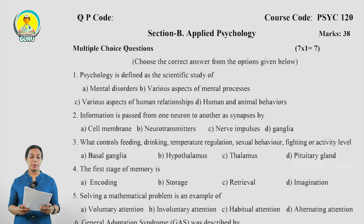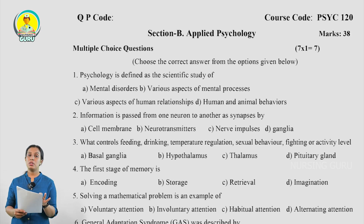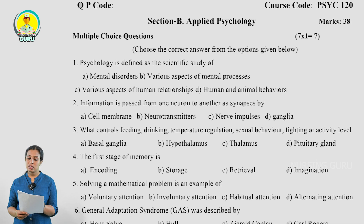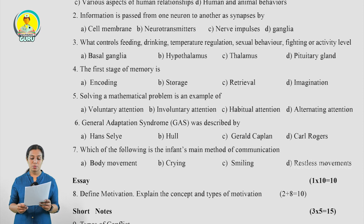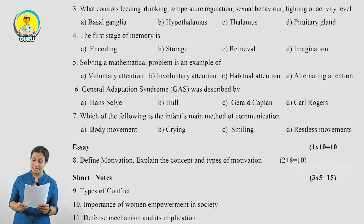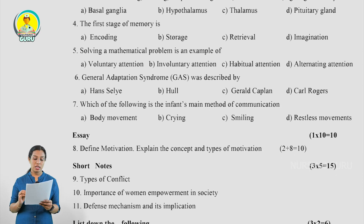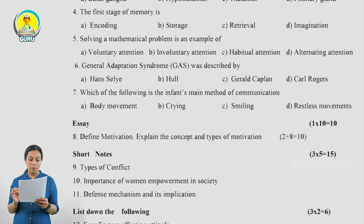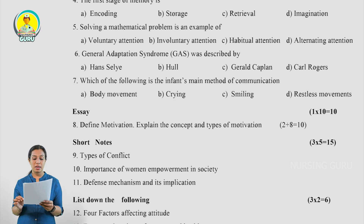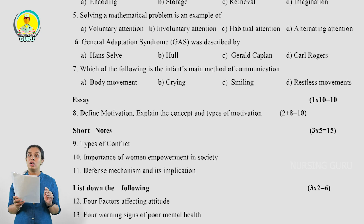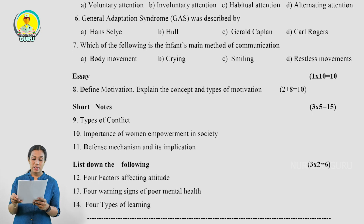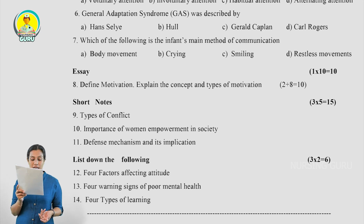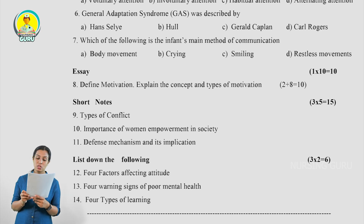Section B is Applied Psychology, carrying a total of 38 marks. There are 7 MCQ questions. The essay question is: 'Define motivation. Explain the concept and types of motivation.' It carries 2 plus 8 equals 10 marks. The 3 short notes, each carrying 5 marks, are: Types of Conflict, Importance of Women Empowerment in Society, and Defense Mechanism and its Implications. The last question type is 'List Down the Following' — 3 questions, 2 marks each, totaling 6 marks: 4 factors affecting attitude, 4 warning signs of poor mental health, and 4 types of learning.